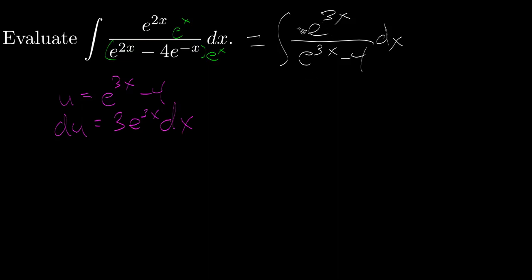And we almost have our du right here, we're just missing a 3, so I'll multiply and divide by 3, and now I have 3e to the 3x dx, that's all du.